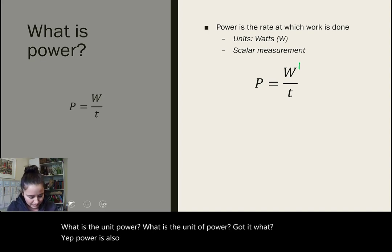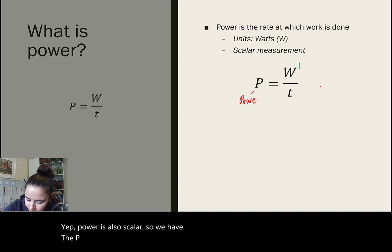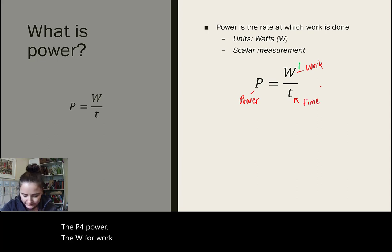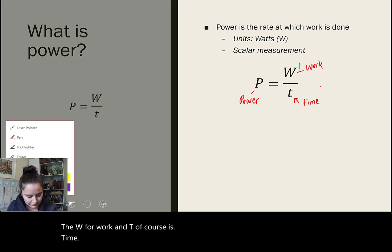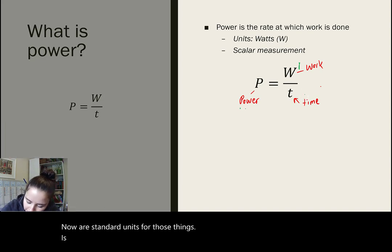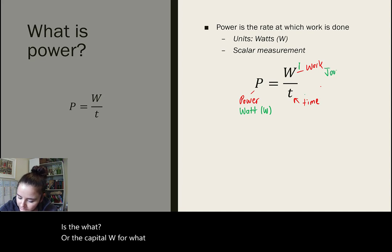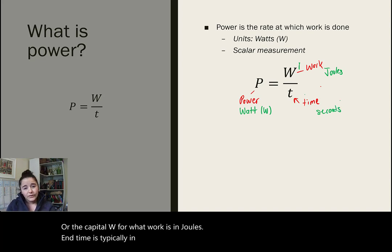So, we have the P for power, the W for work, and T, of course, is time. Our standard units for those things is the watt, or capital W for watt. Work is in joules, and time is typically in seconds.